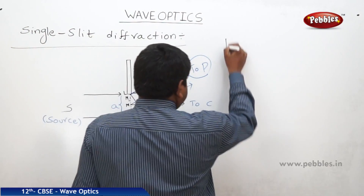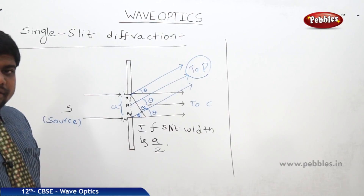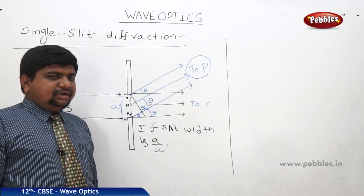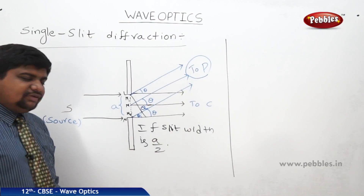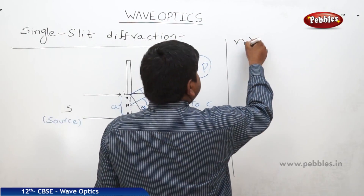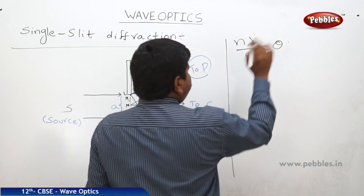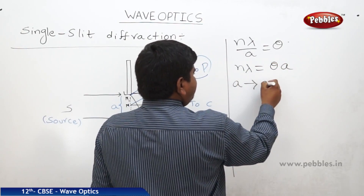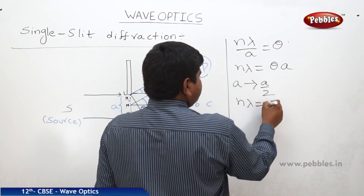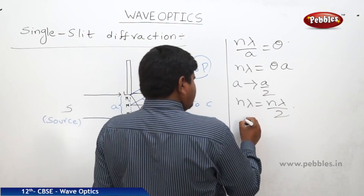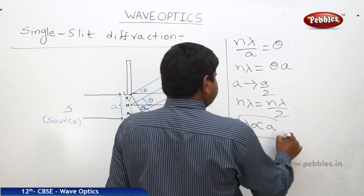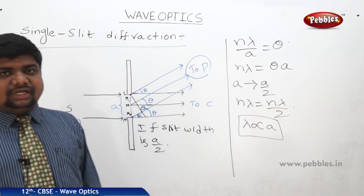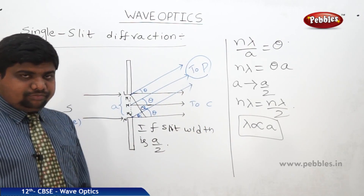In this case, we can see there is a relationship between theta and aperture. N plus 1 half into lambda by A is equal to theta for dark fringes, and N lambda by A is equal to theta. If A becomes A by 2, then N lambda equals theta times A, and N lambda will become N lambda by 2. Because lambda is proportional to aperture — aperture should be in the order of wavelength, how much we are exposing onto the slit. That is the important point.